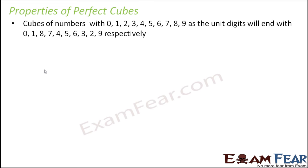So the first property is cubes of numbers with 0, 1, 2, 3, 4, 5, 6, 7, 8, 9 as the unit digits will end with 0, 1, 8, 7, 4, 5, 6, 3, 2, 9 respectively.